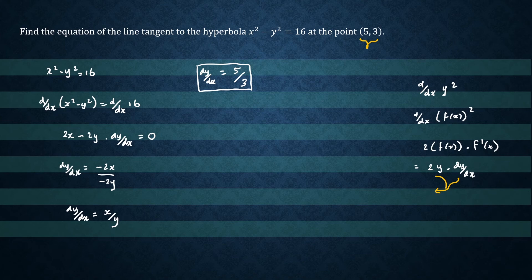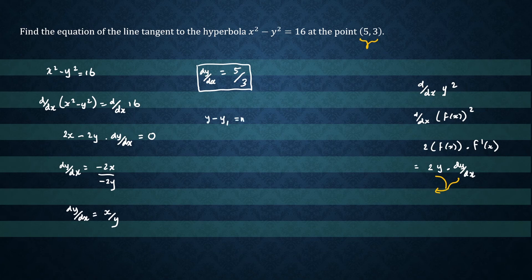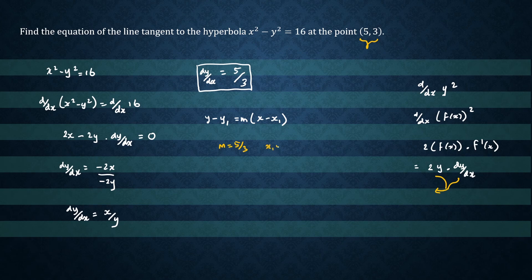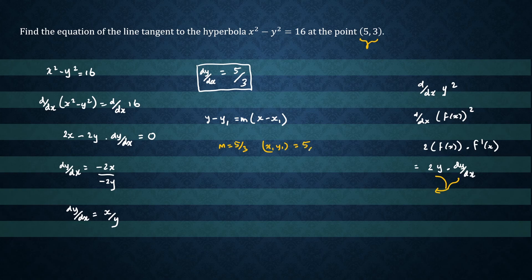So we'll use the point-slope form for the tangent line. So we'll write that as y minus y1 equals m times x minus x1. So our m, which is our slope, is 5 over 3, and (x1, y1) is going to be the point of tangency, which is (5, 3).